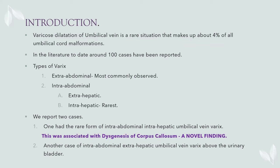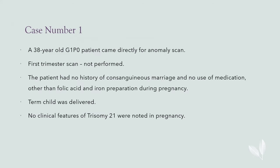We here report two cases. One had the rare form of intra-abdominal intra-hepatic umbilical vein varix, and this was associated with dysgenesis of the corpus callosum. Another case of intra-abdominal extra-hepatic umbilical vein varix was also seen.